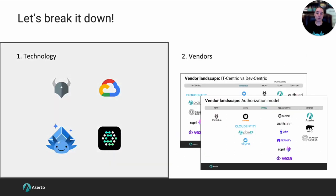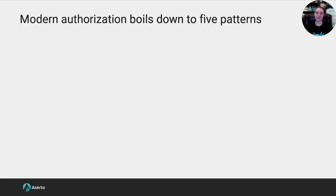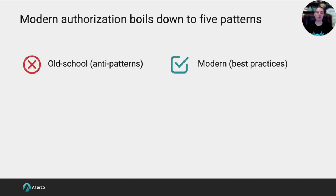Let's break it down. We'll start first with the technology landscape and then turn our attention to vendors. Modern authorization really boils down to five patterns. All of the different papers all do these five things in a modern way. I'll first go through all the anti-patterns — how we do them today — and then talk about the best practices we need to evolve to. The first one is each service or application does its own authorization, and we know why that's bad: the N times N problem.